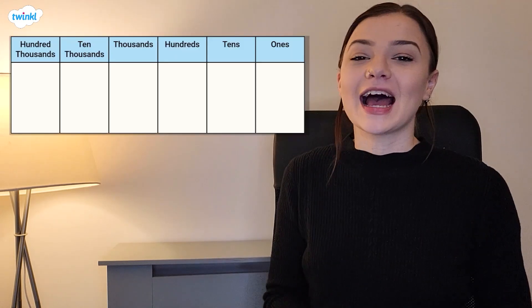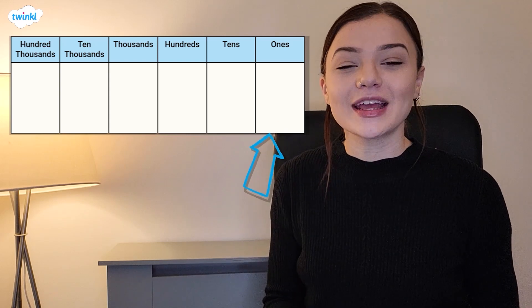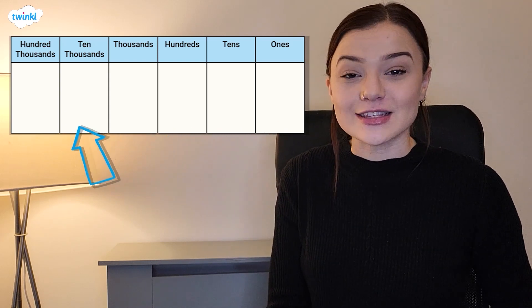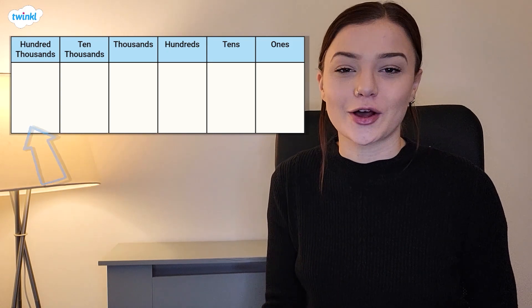Here is a place value chart. As you can see, we have the ones column, the tens column, the hundreds column, the thousands column, the tens thousands column, and the hundreds thousands column.